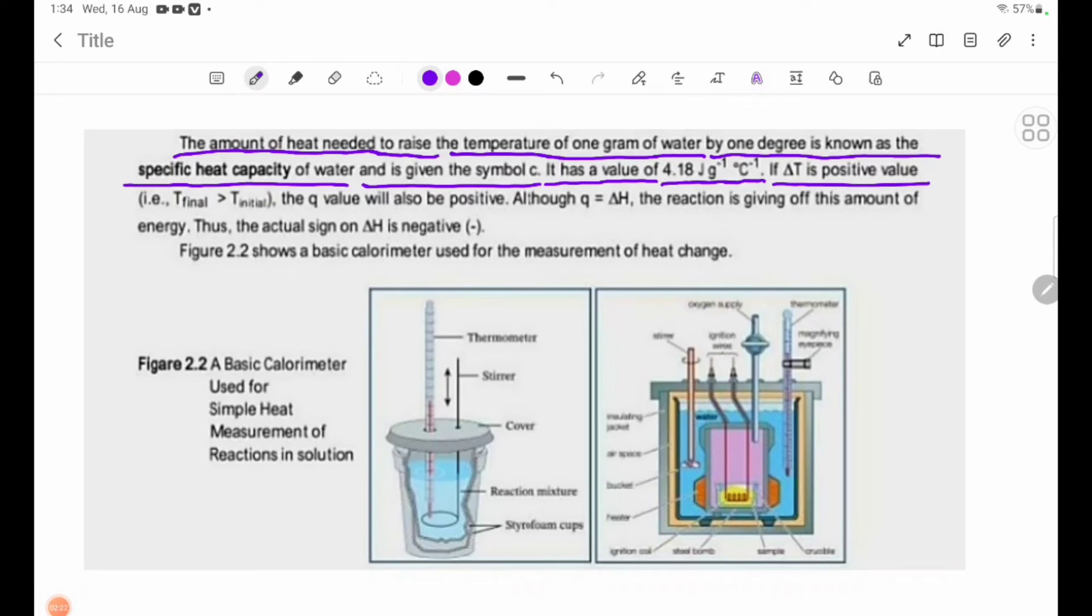If delta T is a positive value—that is, T final is greater than T initial—the Q value will also be positive. Although Q equals delta H, the reaction is giving off this amount of energy. Thus, the actual sign on delta H is negative.